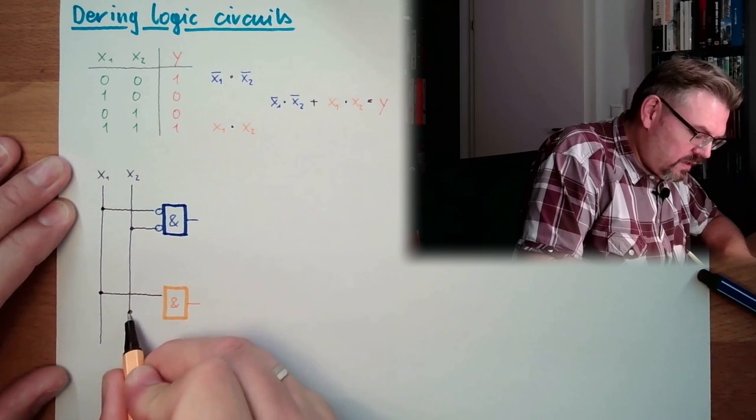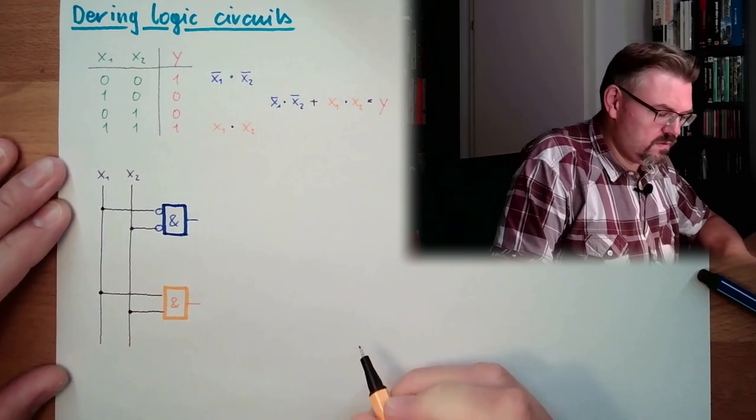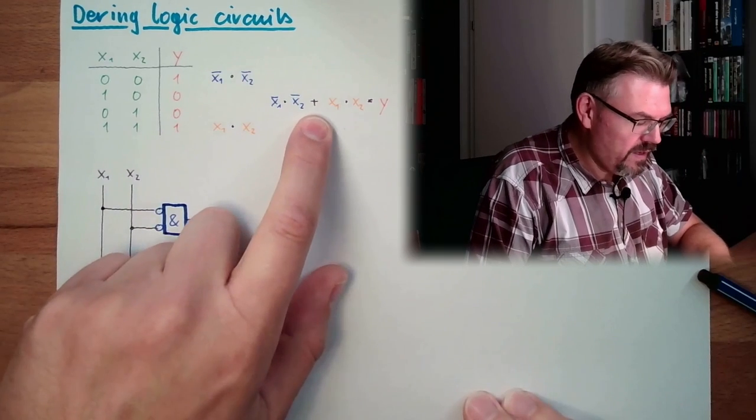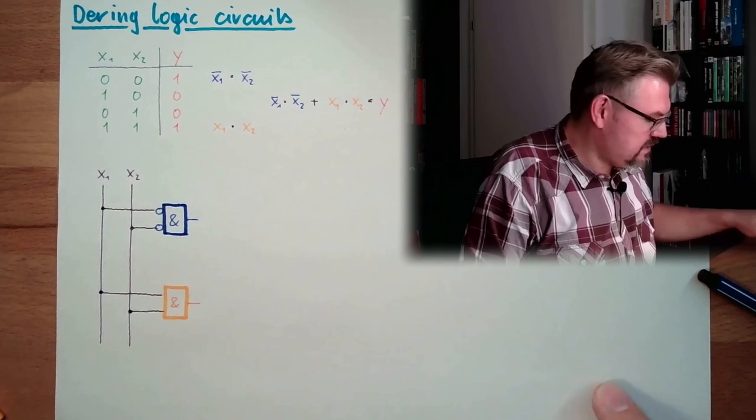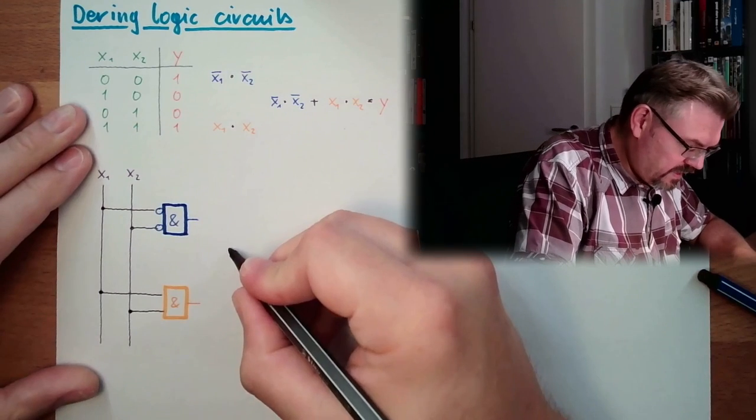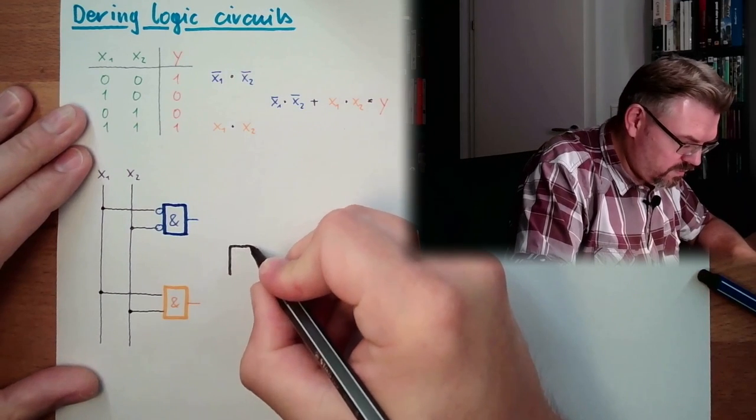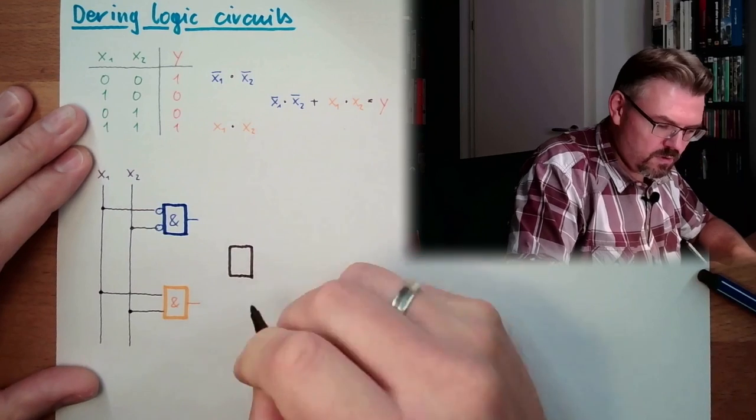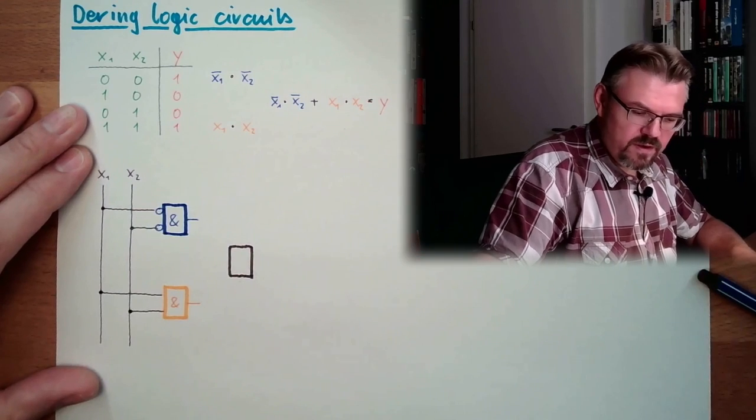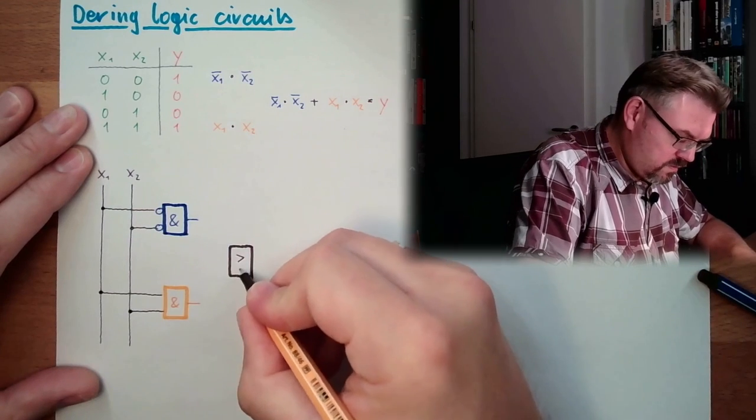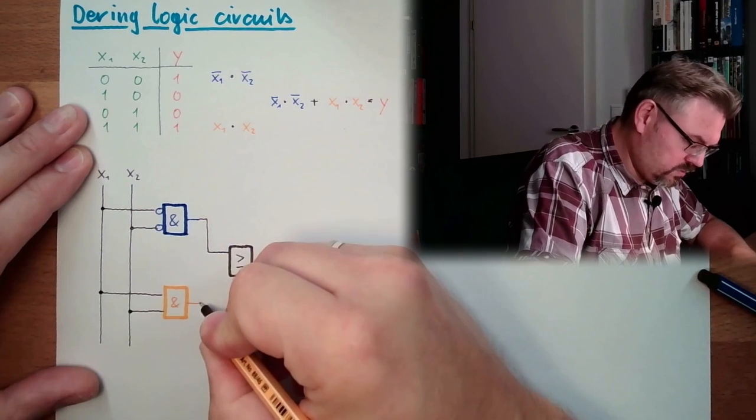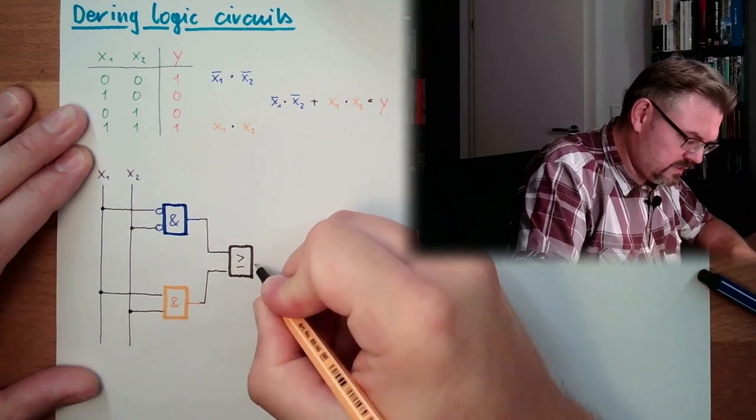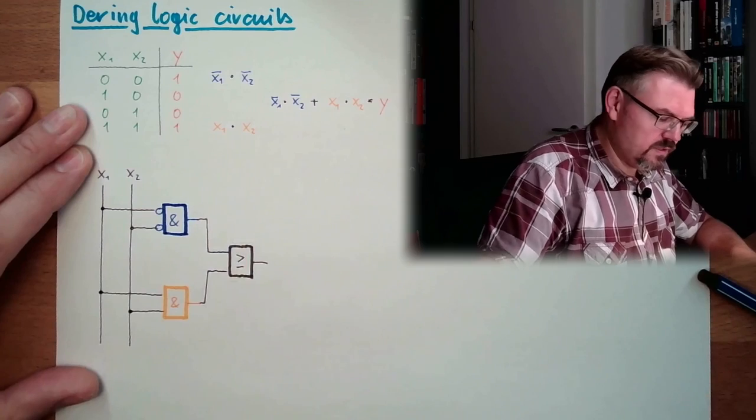We have x1. And we have x2. And what do we need then? We need this AND here. Ah, this OR. So in the end we have here an OR. And we are combining those two elements. And here the result is Y.